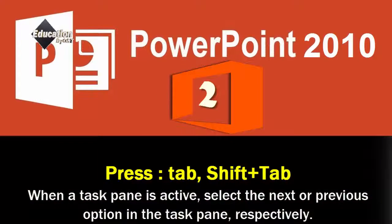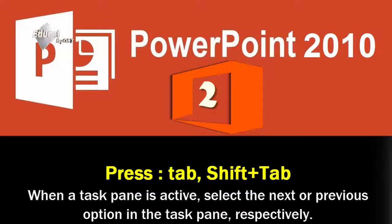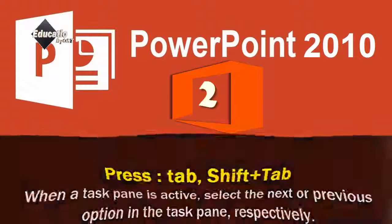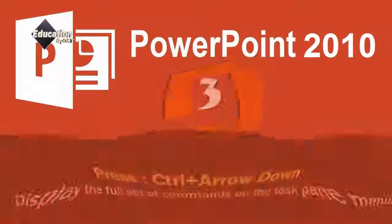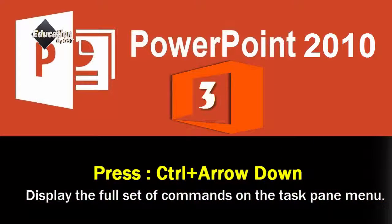Tab, Shift+Tab: When a task pane is active, select the next or previous option in the task pane, respectively. Control+Arrow Down: Display the full set of commands on the task pane menu.